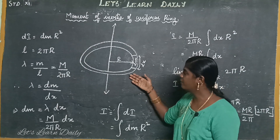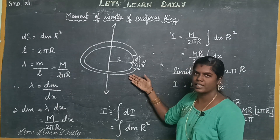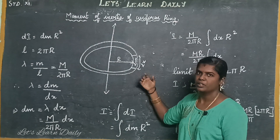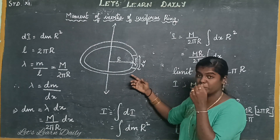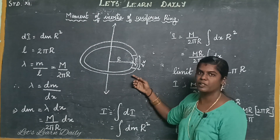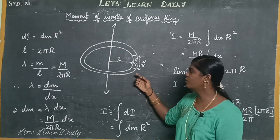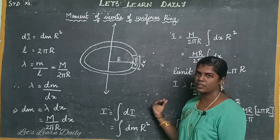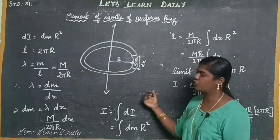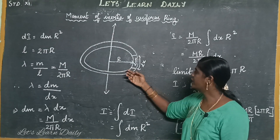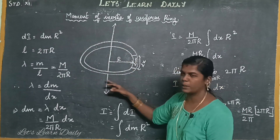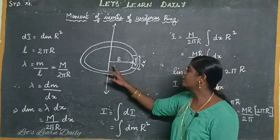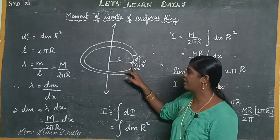First, we need to consider a ring. There is an object in the ring shape. I will show you how to do this. If you consider a ring, the radius of the ring is R.